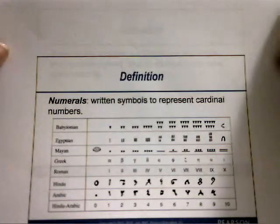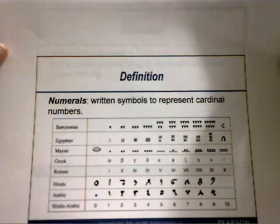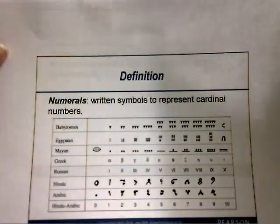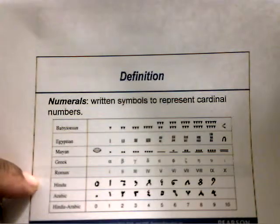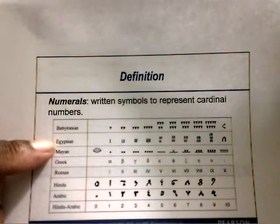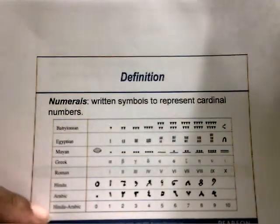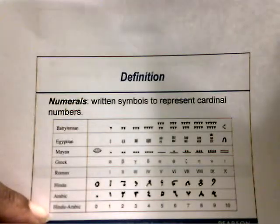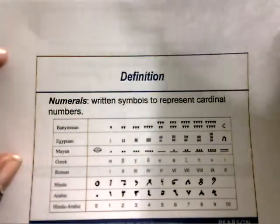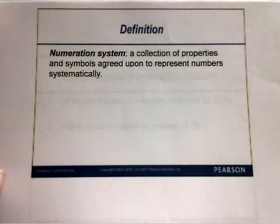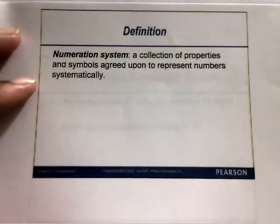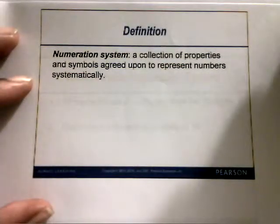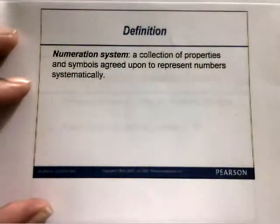We'll start with a definition of what numerals are. Numerals are written symbols used to represent cardinal numbers. A numeration system, by definition, is a collection of properties and symbols agreed upon to represent numbers systematically. Each of these systems has special symbols that represent numbers.